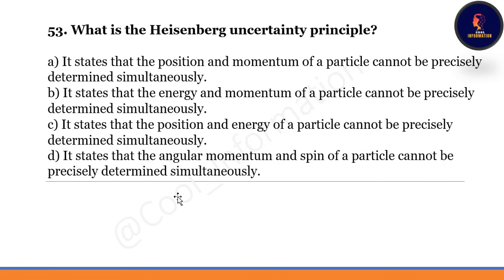What is the Heisenberg uncertainty principle? Correct option is B — the position and momentum of particles cannot be precisely determined simultaneously.